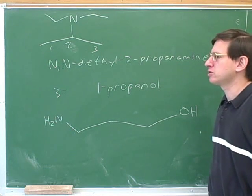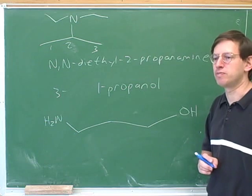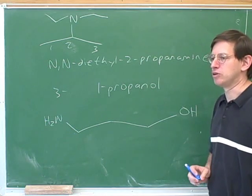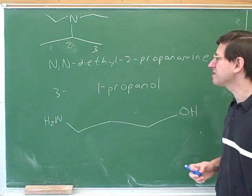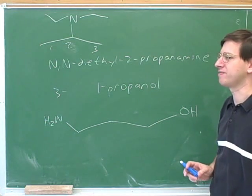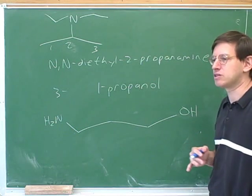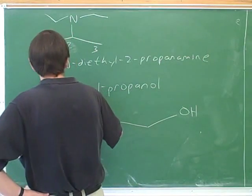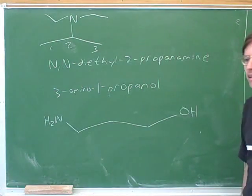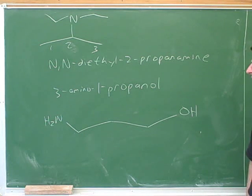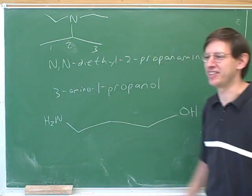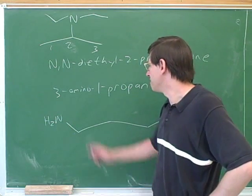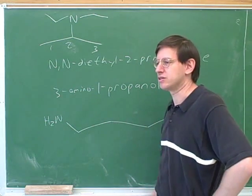But the point is that every functional group has both a suffix and a prefix. It gets the suffix when it's the principal group. But if it's not the principal group, it gets the prefix. And that's what we're trying to figure out. Well, the chemists actually for once did things very logically here. We know that amines have a very easy suffix, which is just amine. And they picked a very logical prefix as well, which is amino. You guys were pretty close. So this would be 3-amino-1-propanol.